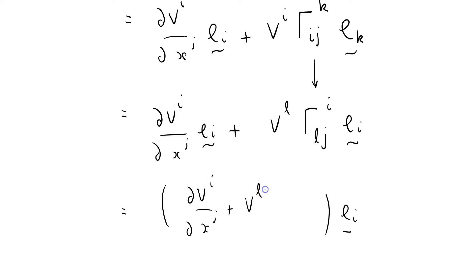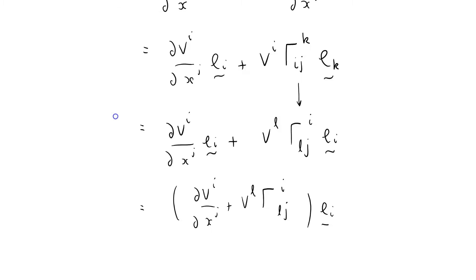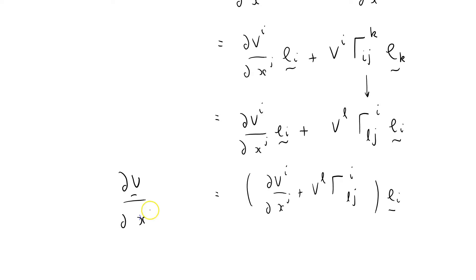dv^i/dx^j plus v^l Christoffel symbol Γ^i_lj. And this is what I've called d(vector v)/dx^j.